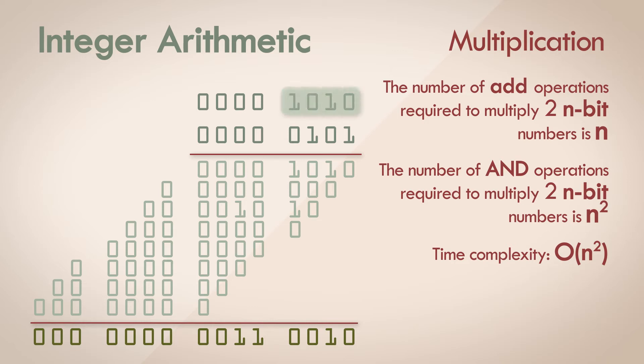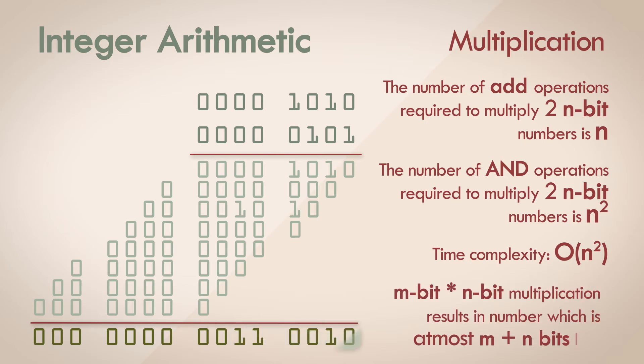We have 10, which is a 4-bit number, and 5, which is technically a 3-bit number. The resultant product of two numbers, which is 50, is a 6-bit number. In general, we can say that a multiplication between an m-bit number and an n-bit number results in a number which has at most m plus n bits.